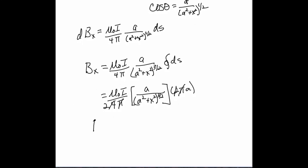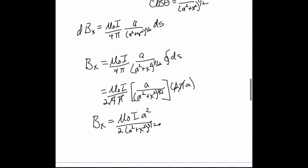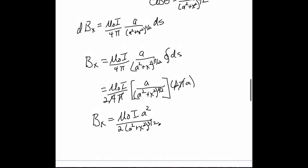So the entire B field in the X direction, which is the only one that matters, is mu naught I A squared over 2 quantity A squared plus X squared to the three halves. And it's that kind of like we had before with the long carrying wire. That is the answer, but it's not actually super descriptive.